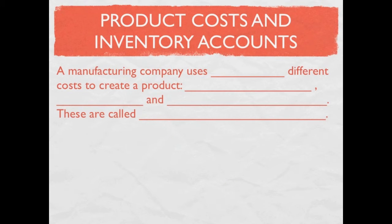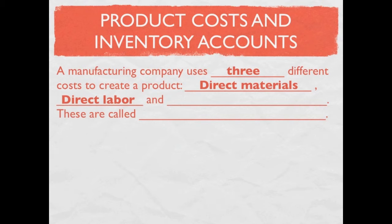Let's look at product cost and inventory accounts for a manufacturing company. A manufacturing company uses three different costs to create a product: direct materials, direct labor, and overhead. These three costs combined are called product cost. You may also hear them called inventoriable cost or manufacturing costs.